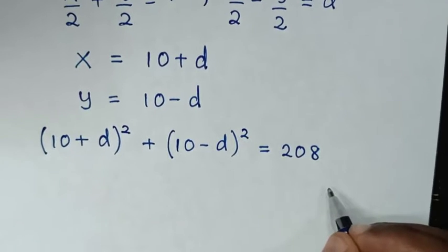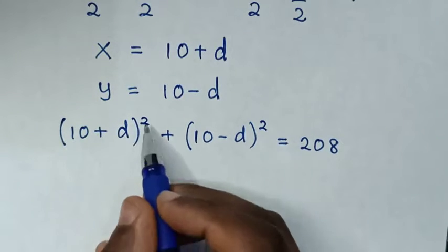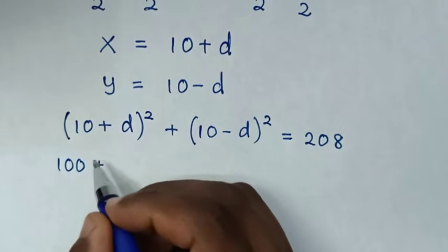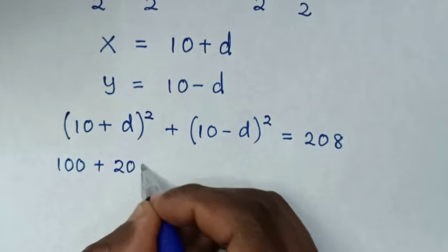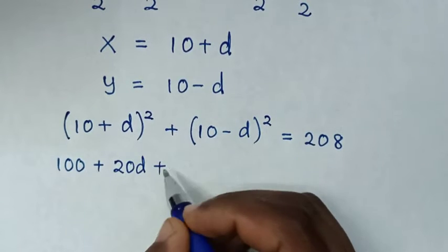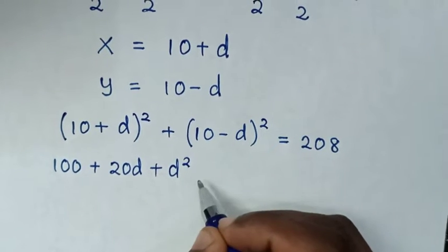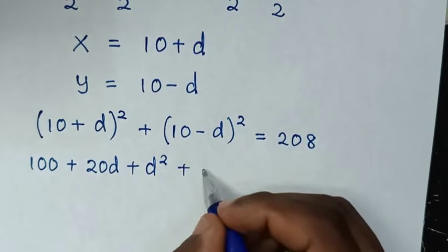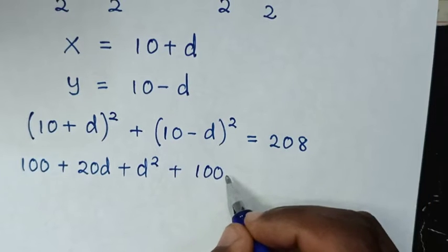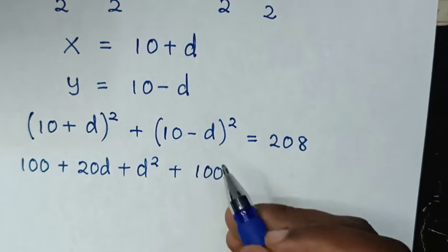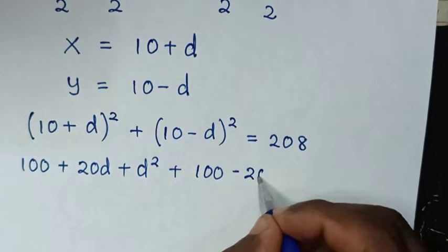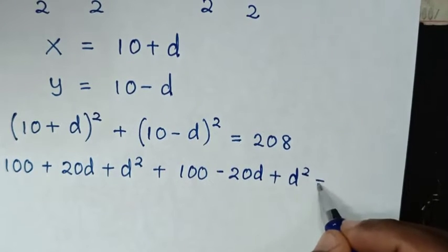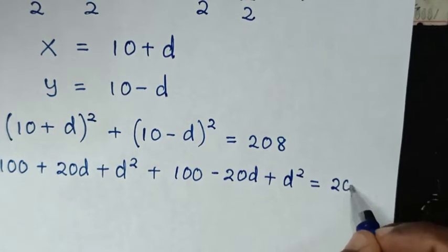Then in the next step we'll expand (10 plus d) squared: 10 squared is 100, plus 2 times 10 times d is 20d, then plus d squared. Then plus we expand (10 minus d) squared: 10 squared is 100, then 2 times 10 times negative d is negative 20d, then plus d squared. So all of that is equal to 208.